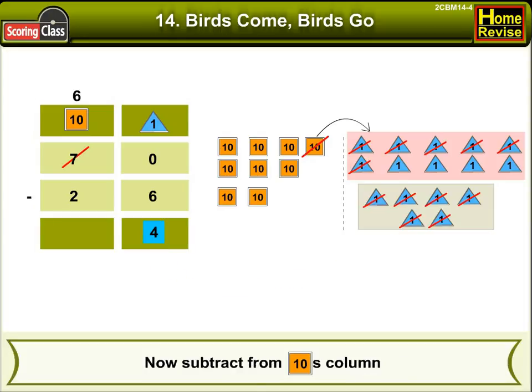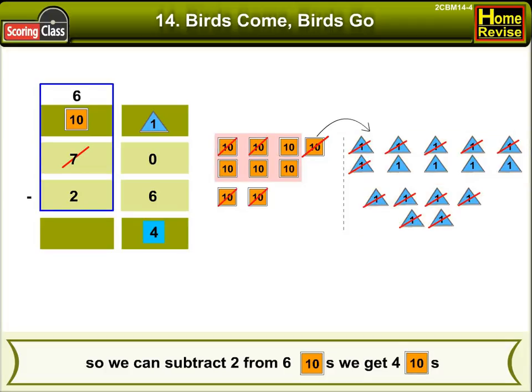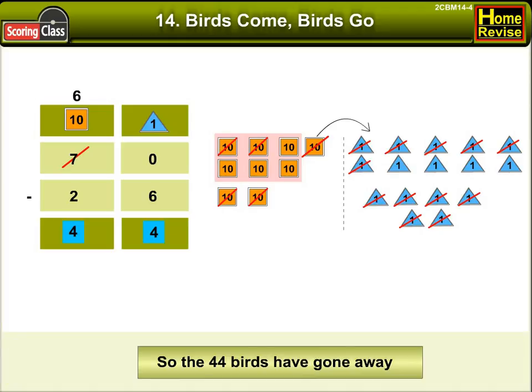Now, subtract from the tens column. Here, we get 6 tens remaining. So, we'll subtract 2 from 6 tens. We get 4 tens. Write 4 in the box below. That means 44 birds have gone away.